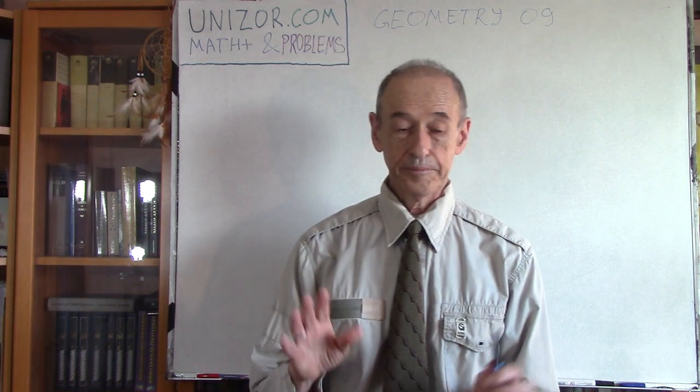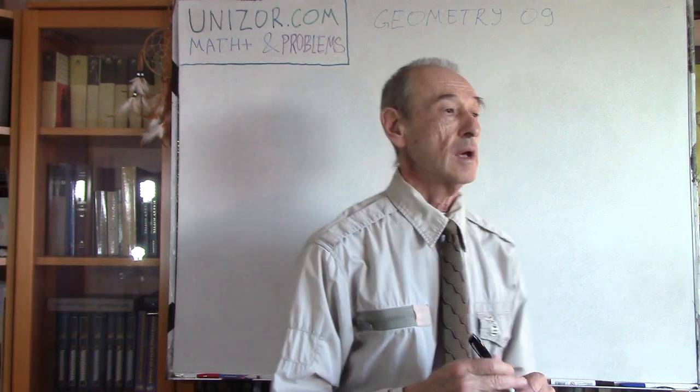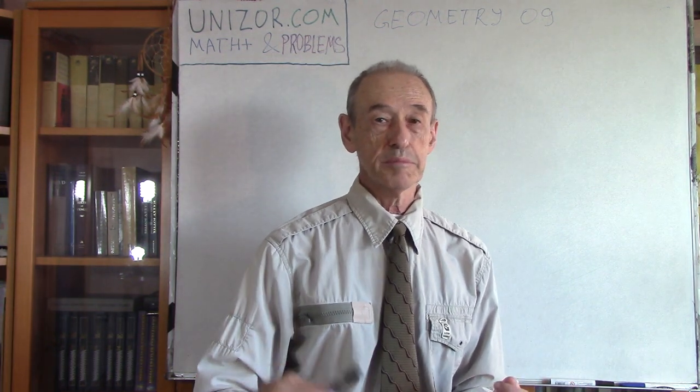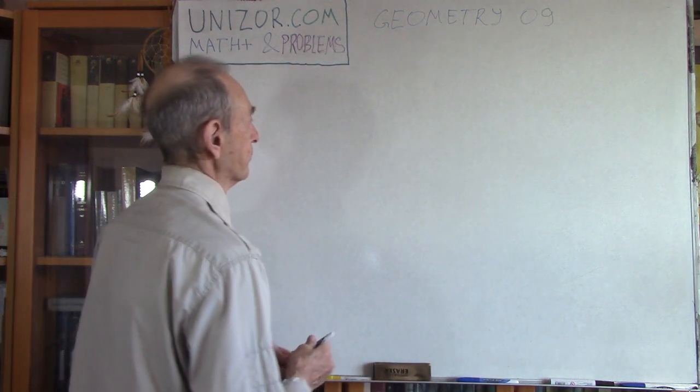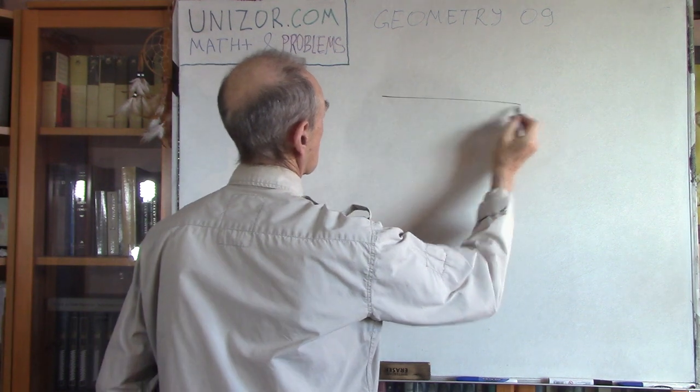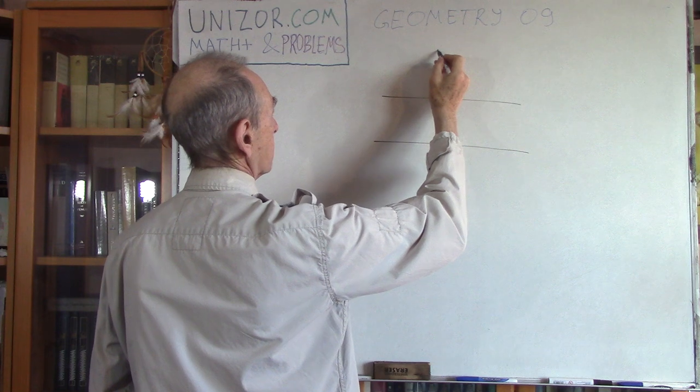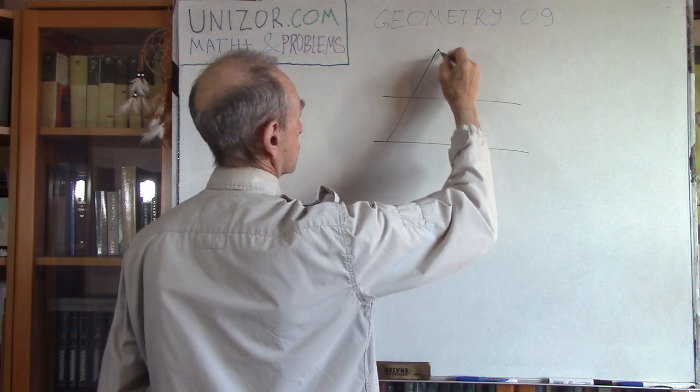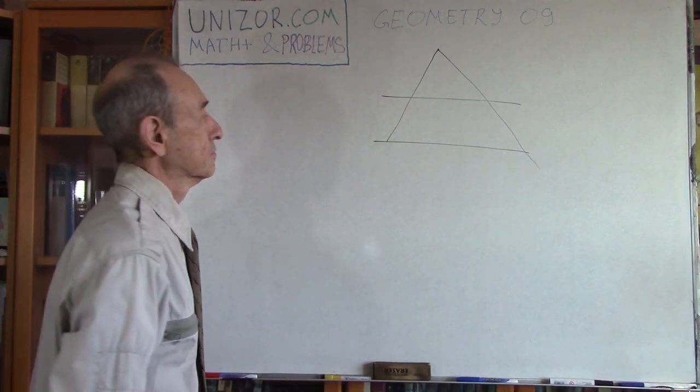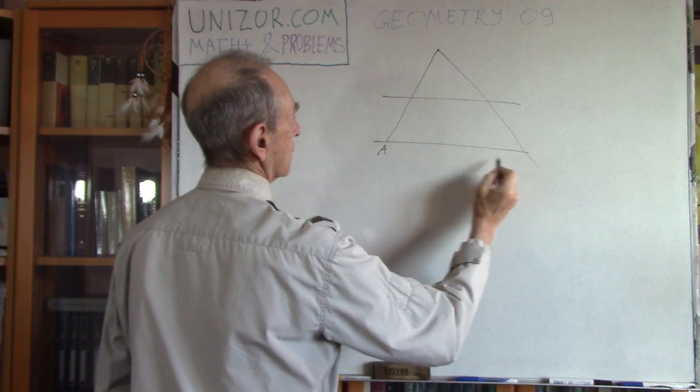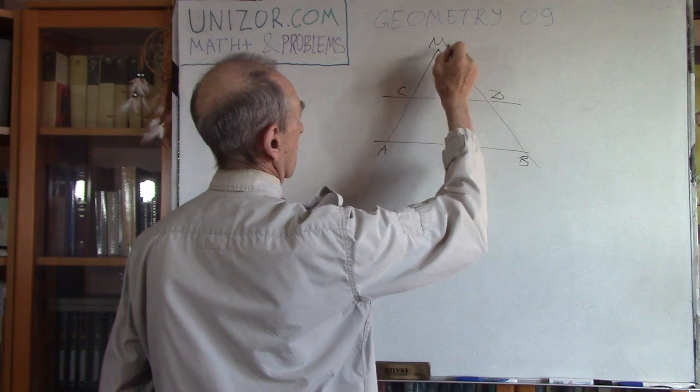First we will start with a theorem which I'm going to prove and then that will be the base of construction problems. Here is the theorem. Consider you have two parallel lines and a point outside. You just draw two lines which cross these parallel lines.